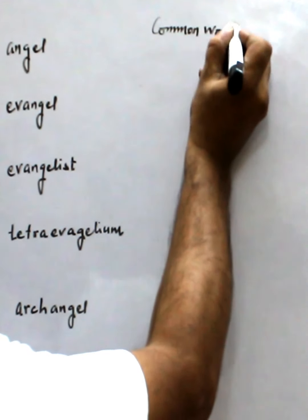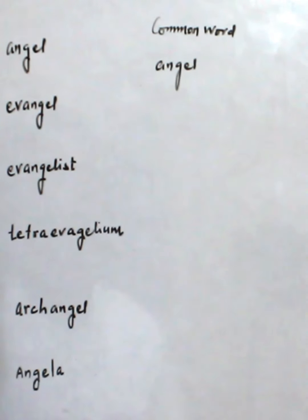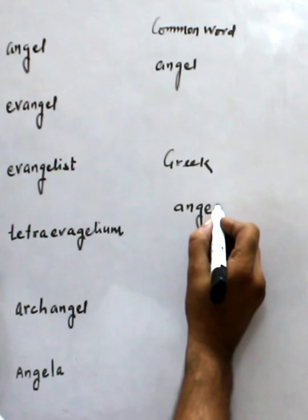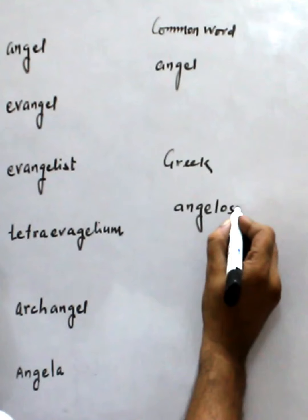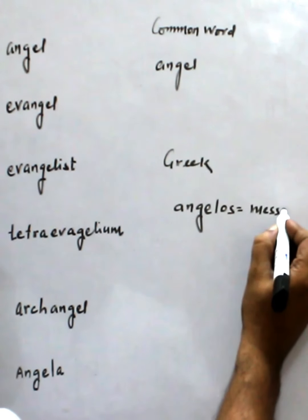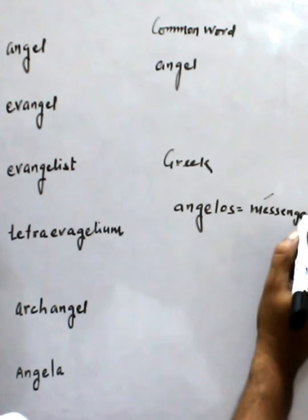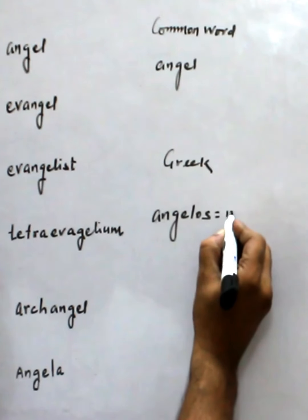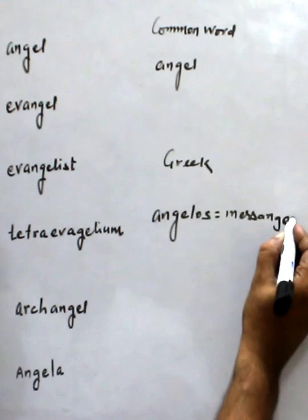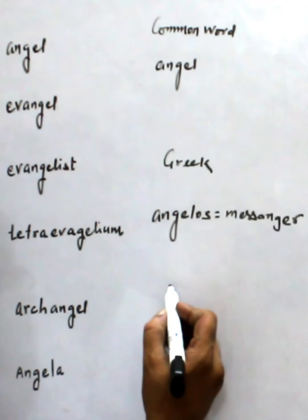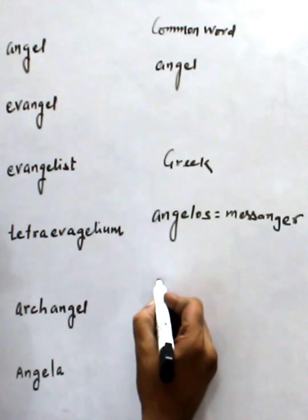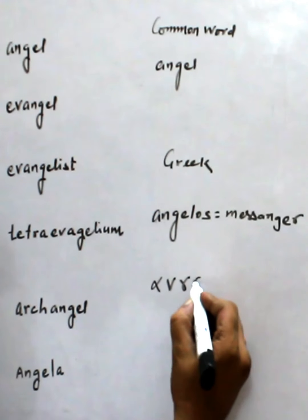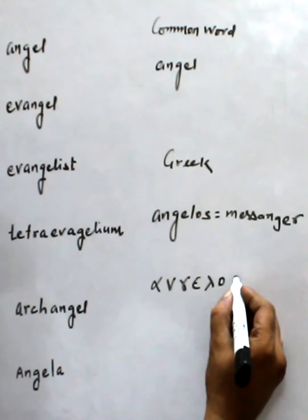The common word is Angel. This is the Greek word Angelos. This means messenger. How do we write it in Greek? Alpha, Nu, Gamma, Epsilon, Lambda, Omicron, and Sigma.